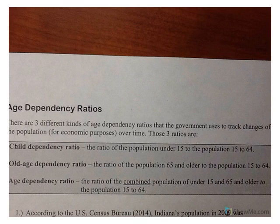Welcome to a review on age dependency ratios. We have three different age dependency ratios. Child dependency ratio is the under 15 population to the working class, which is 15 to 64. Old age dependency ratio is 65 and over compared to the working class, 15 to 64. Age dependency is combined - young people under 15 and old people 65 and older compared to the working class of 15 to 64. Just a refresher on what those are.